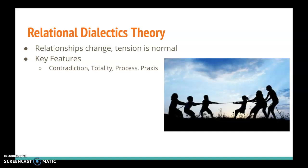Process is another important feature of relational dialectics theory. As we said before, relationships are things that change — it can be said that relationships go through the process of change. In our relationships, we can resolve some contradictions, but others might arise. In addition, our own feelings, needs, wants, and desires may change over time.